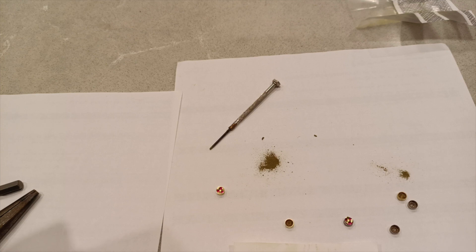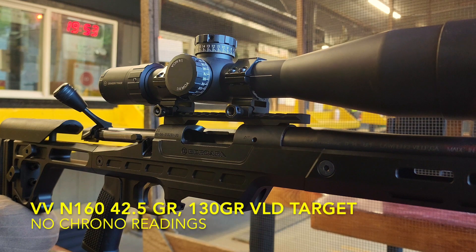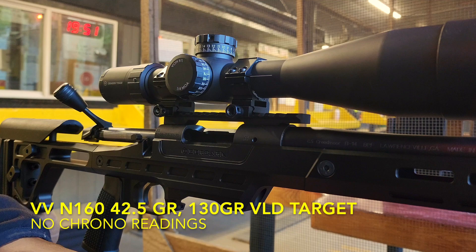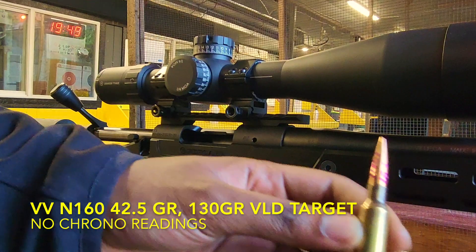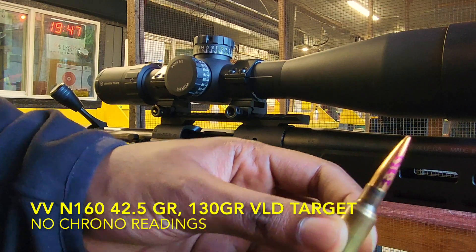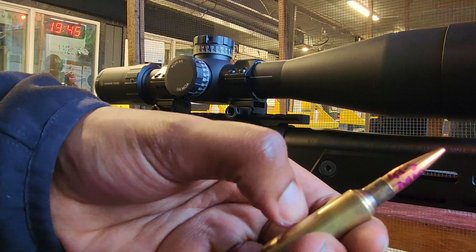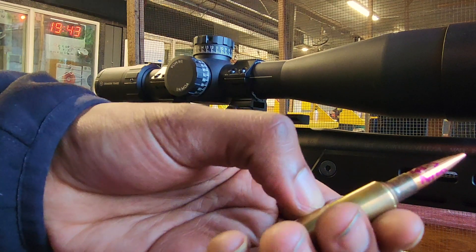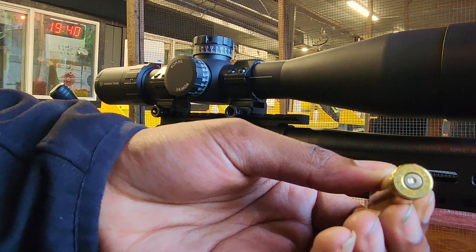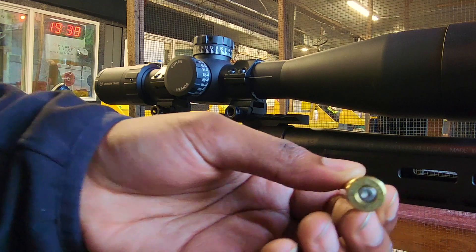Now we'll move on to the footage of testing their groups. So we're starting this off with Winchester, and this is 43 and once 42.5 and N160, and you can see here we got the Pierce primer, so let's see how this does.